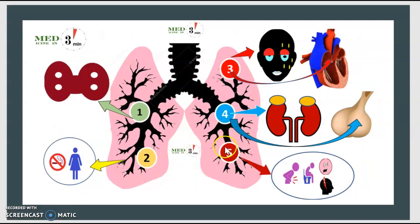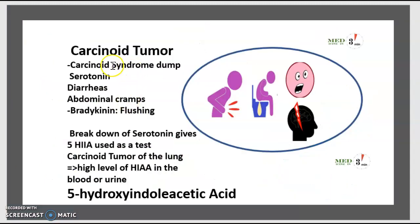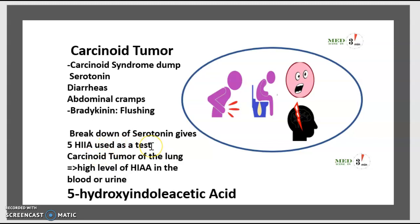The last category is carcinoid tumor. There is a release of serotonin, causing diarrhea and abdominal cramps. Together with bradykinin, it causes flushing and migraines. The breakdown of serotonin produces 5-hydroxyindoleacetic acid (5-HIAA), which is used as a diagnostic test. Elevated 5-HIAA in the blood and urine confirms carcinoid tumor of the lung.